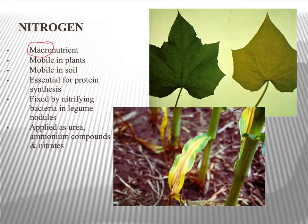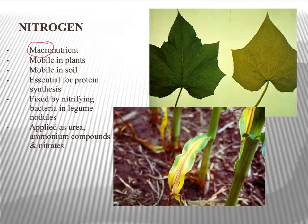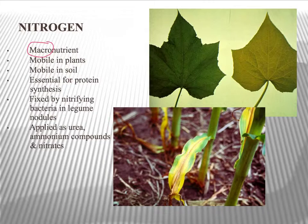Nitrogen is probably the most important macronutrient in a farming situation. It is absolutely vital for the production of any and all proteins within a plant. Anybody that does VCE biology will know just how important proteins are, because all of the enzymes that make things like photosynthesis and respiration work — that whole thing is enabled by an enormous variety of proteins. Without those proteins, the plant will basically wither and die.